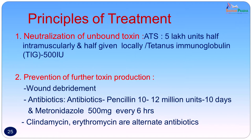The basic principles of treatment are: first, neutralization of unbound toxin — toxin already bound cannot be neutralized. ATS 5 lakh units, half intramuscularly and half locally, is given. This can also be replaced by tetanus immunoglobulin, which is of human origin and is preferred as ATS is of equine origin and likely to give anaphylaxis. Smaller quantities of tetanus immunoglobulin are required — only 500 international units — and it does not give anaphylaxis.